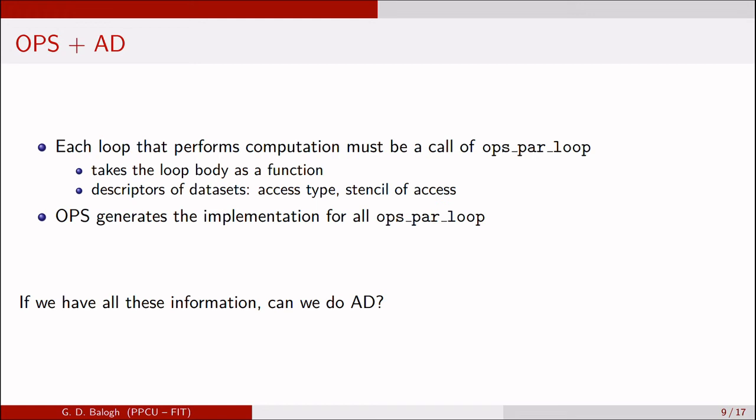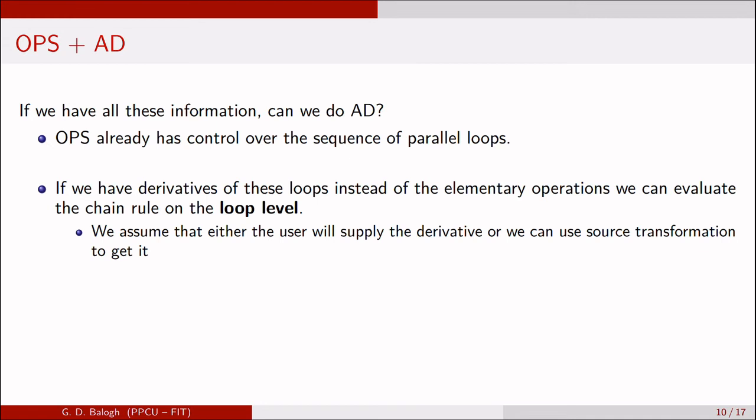The question is, can we do AD from these informations only? There is one missing information at first glance: we don't have the derivative of the loop bodies. But if we suppose that we have the derivatives of the loop bodies, the current implementation will search for these derivatives by name.